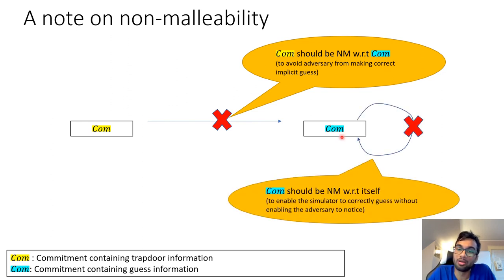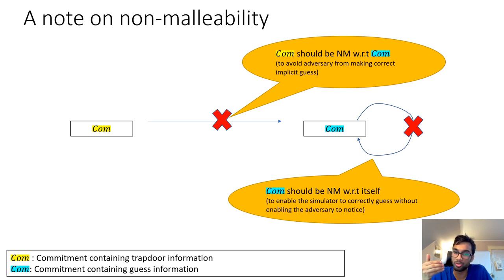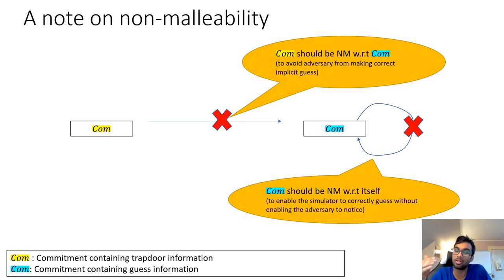On non-malleability: we require that it should not be possible to transfer any implicit information inside the yellow (trapdoor) commitments to the values inside the blue (guess) commitments — needed to prevent an adversary from making correct implicit guesses about honest parties' trapdoor values. We also require the blue commitments to be non-malleable with respect to themselves, which is needed so that in the security proof, when we switch the simulator from taking wrong guesses to correct guesses about the adversary's trapdoor, the adversary does not notice the change.